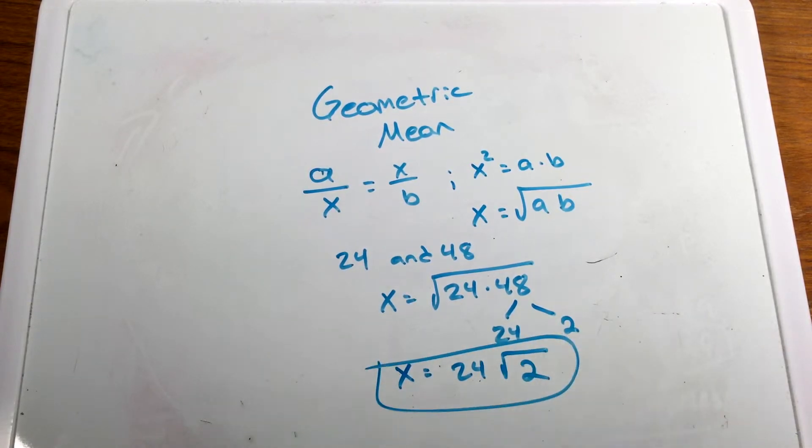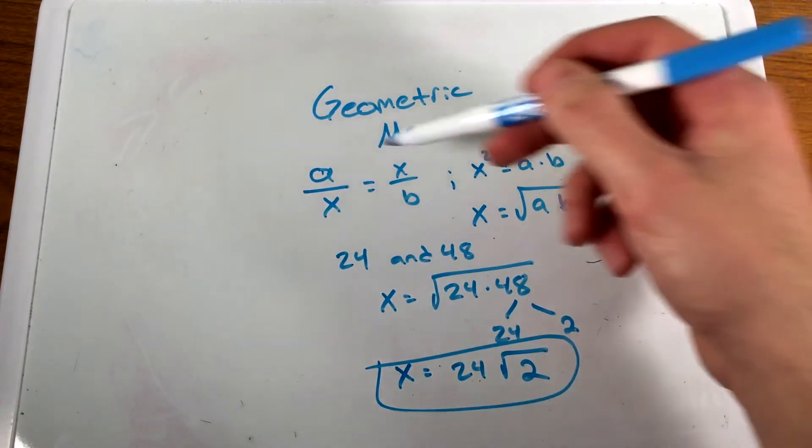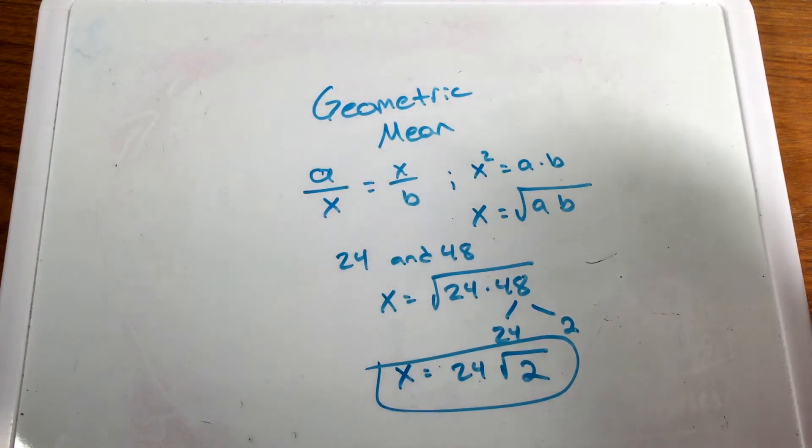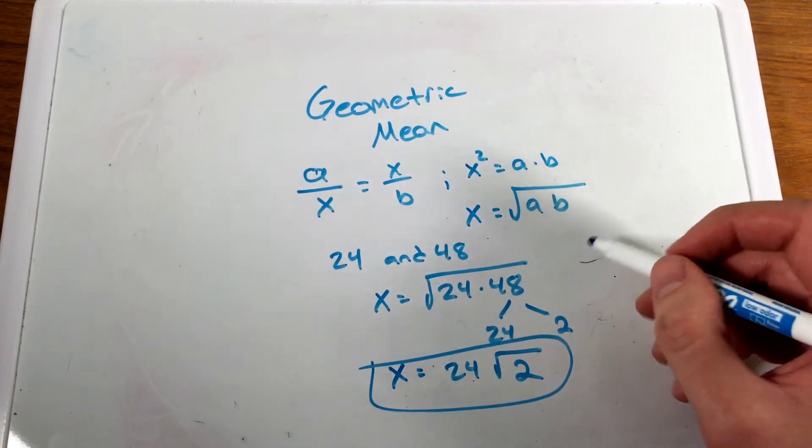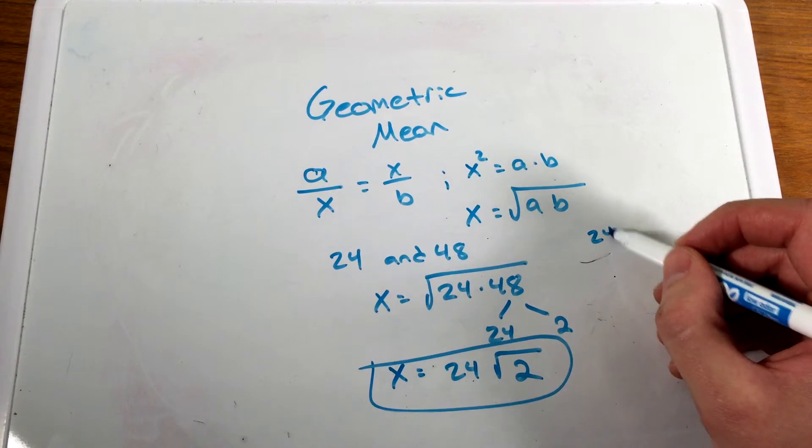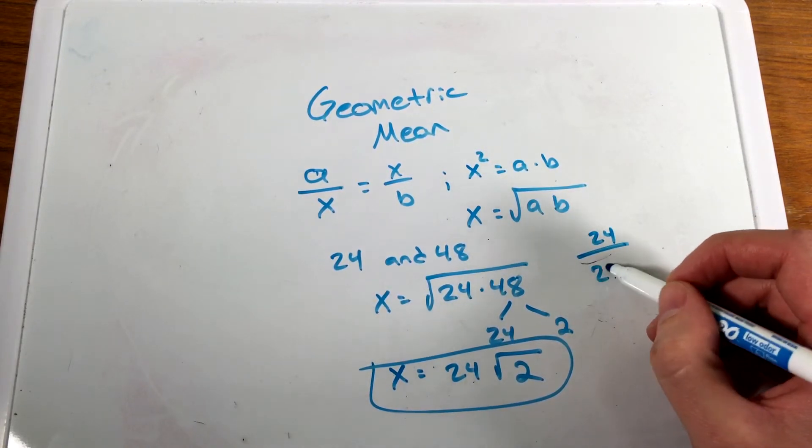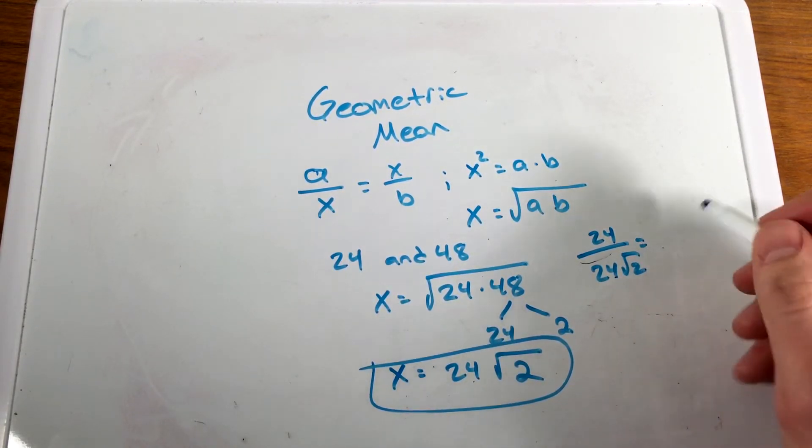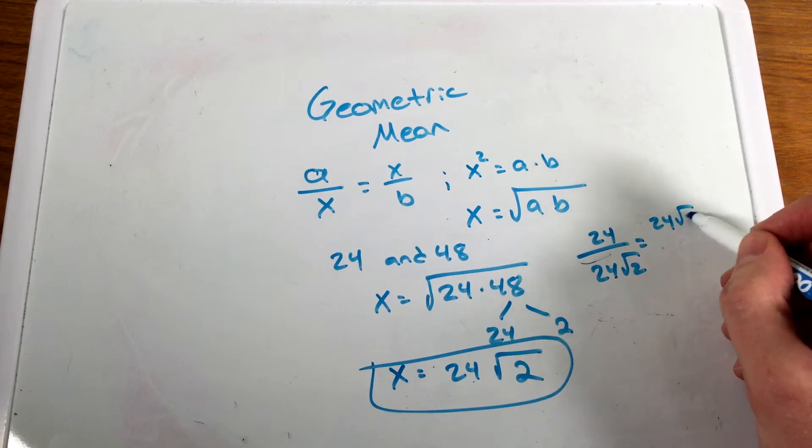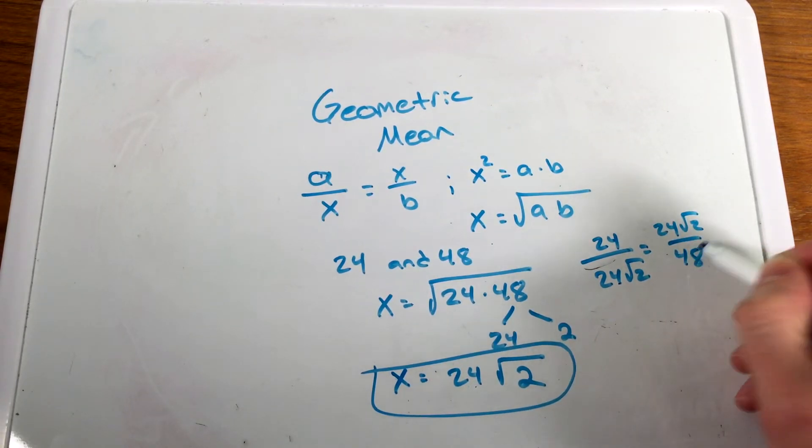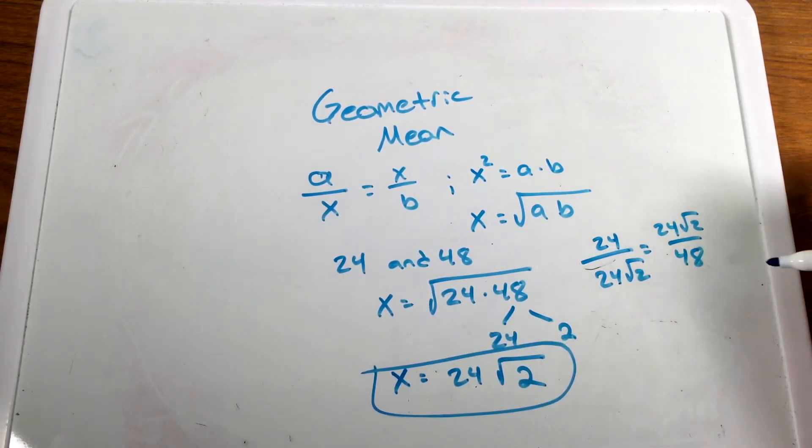This is the geometric mean of our two values, 24 and 48. We can make a true proportion with this number. So we can have 24 over 24 square root 2 equals 24 square root 2 over 48. This would be a true proportion.